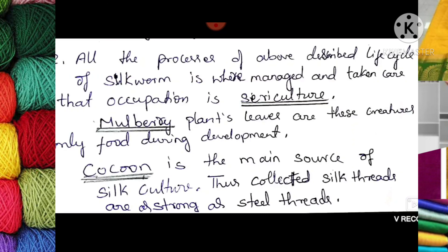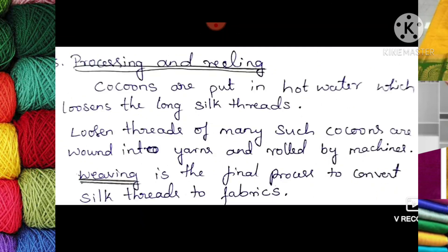Silk threads are as strong as steel threads. When the cocoon is placed in boiling water, it releases all the threads. One end of the thread is found and rolled onto reels. Cocoons are put in hot water which loosens the long silk threads; the loosened threads of many cocoons are wound into yarns and rolled by machines.